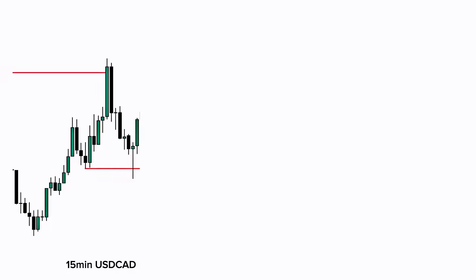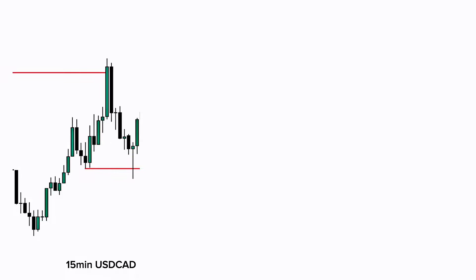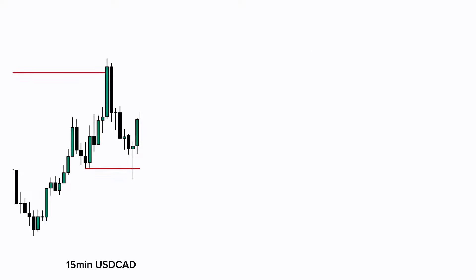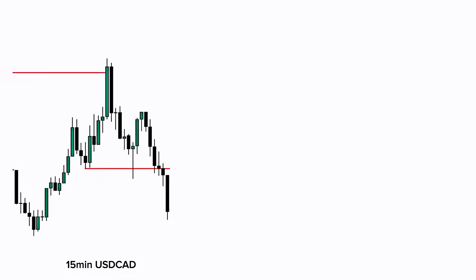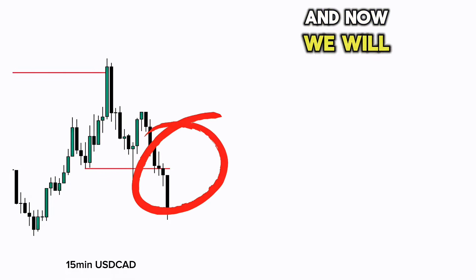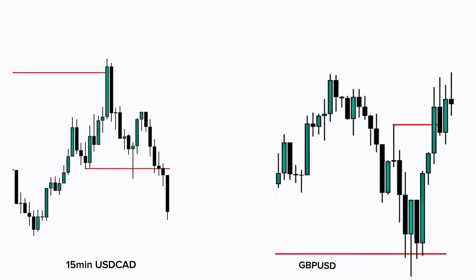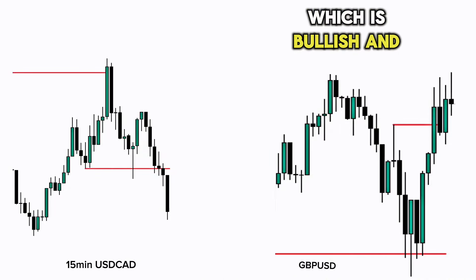Step three: we study the chart on the 15-minute time frame. I always use 15 minutes with four-hour because they are tailor-made for each other — no other time frame works better to confirm the four-hour bias and entry. On the 15-minute chart, we identify the last swing low made before the four-hour swing high was swept. We highlight this area and wait for price to close below it as confirmation of our entry. You can see that price closed below it, signaling a short entry. On GBP, the price closed above the last swing high before sweeping the low, confirming the bullish structure.